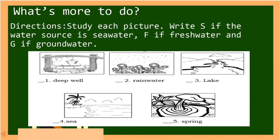Now kids, let's try to answer some questions. Kindly get your science notebook and answer the following. Study each picture. Write S if the water source is sea water, F if fresh water, and G if ground water.